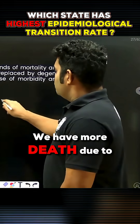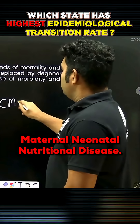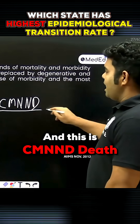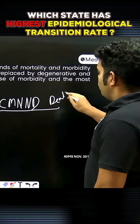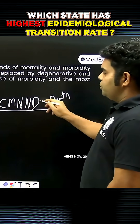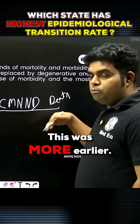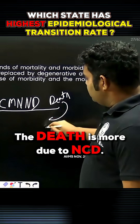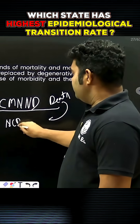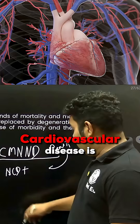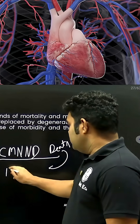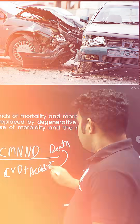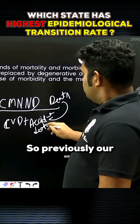Previously, we had more deaths due to communicable, maternal, neonatal, and nutritional (CMNND) diseases. Now, the deaths are more due to non-communicable diseases (NCDs) like cardiovascular disease (CVD), plus accidents, which are causing more deaths.